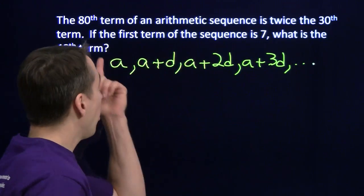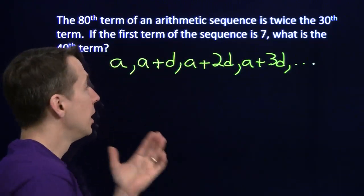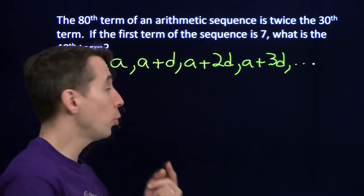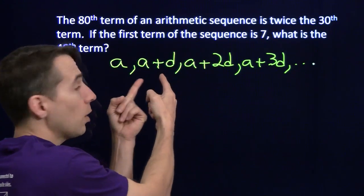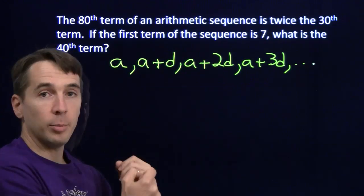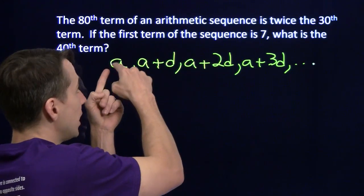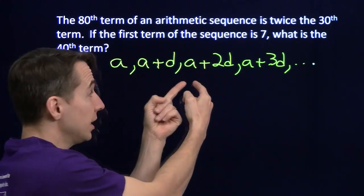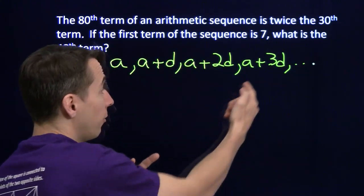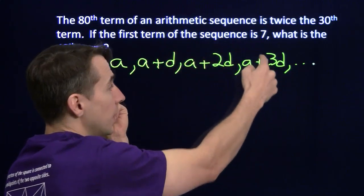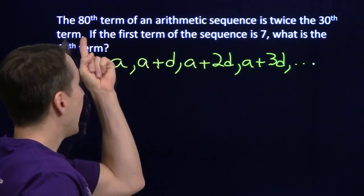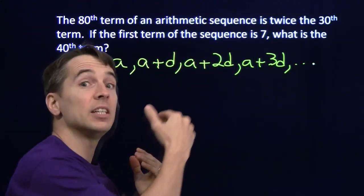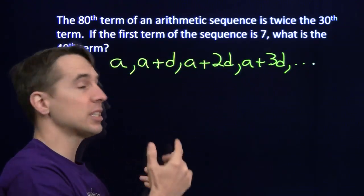Now I'm not going to list these all the way out to the 80th term, because we should be able to tell from this what the 80th term will be. The second term, we take one step of length D. We get to A plus D. The third term, we take two steps of length D to get to A plus 2D. The fourth term, we take three steps, A plus 3D. The 80th term, we're going to take 79 steps to get out to A plus 79D.